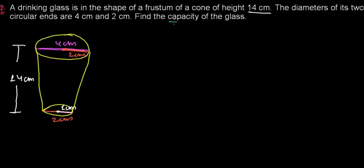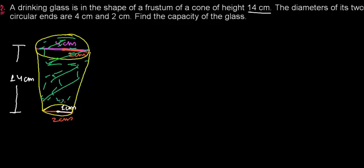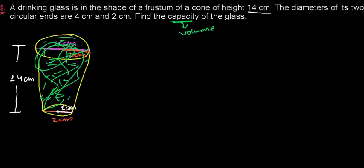The question asks us to find the capacity of the glass, meaning how much water or anything can be filled inside. Capacity means volume. Whenever the word capacity comes up in a mensuration chapter, you need to remember that they are asking for the volume — how much volume of water, or anything equivalent, can be filled inside.